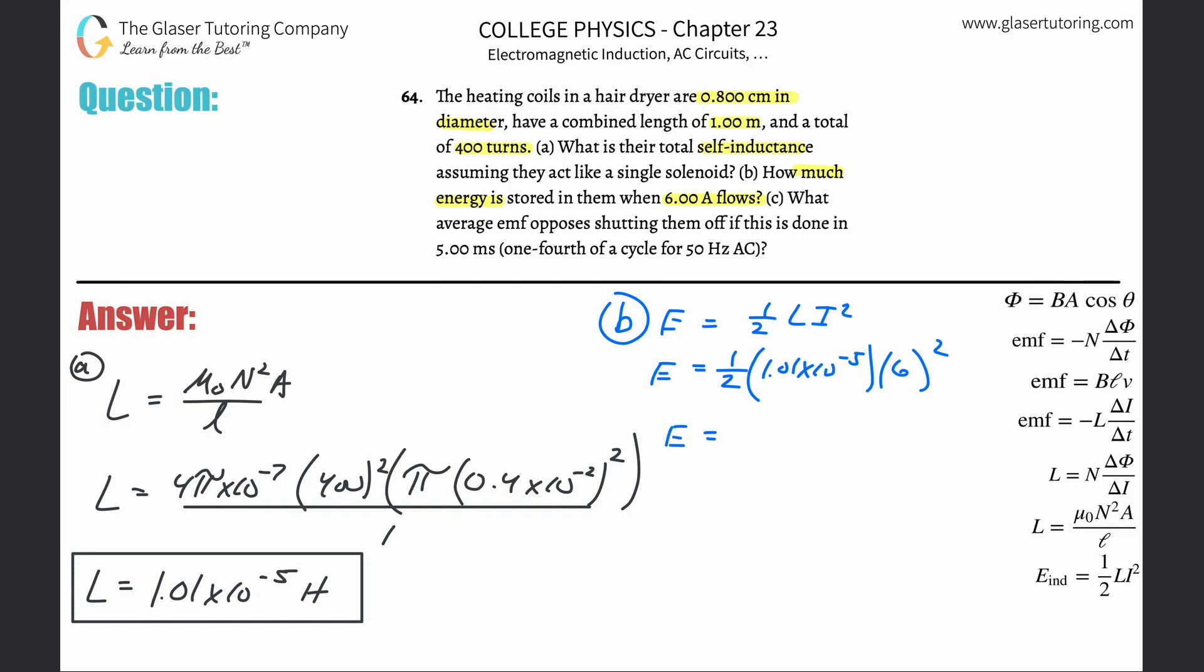We can now find the value: 0.5 multiplied by 1.01—actually let's use the exact answer. So 0.5 multiplied by the prior answer, multiplied by 6 squared.